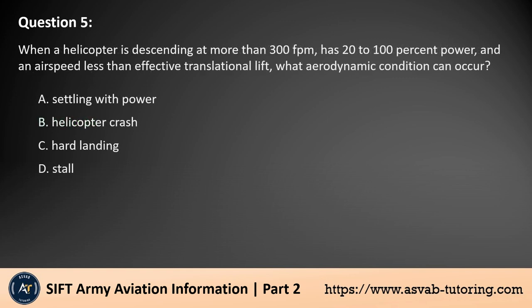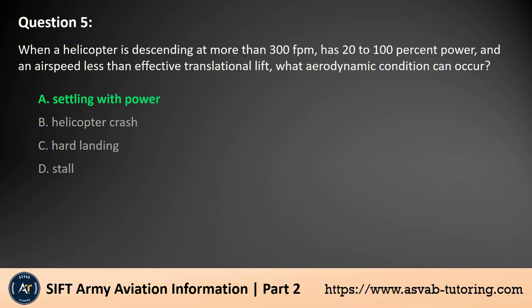Question 5. When a helicopter is descending at more than 300 fpm, has 20–100% power, and an airspeed less than effective translational lift, what aerodynamic condition can occur? A. Settling with power. B. Helicopter crash. C. Hard landing. D. Stall. The answer is A. The aerodynamic condition described is settling with power. This occurs when a helicopter descends at more than 300 feet per minute with 20–100% power and airspeed below effective translational lift. The helicopter enters its own downwash, losing lift and control despite sufficient engine power. It's also known as Vortex Ring State.